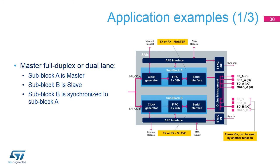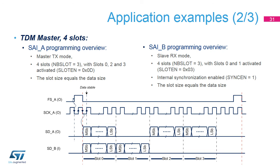For a full duplex master mode, two data lines are needed, so two sub-blocks need to be used. The master sub-block A provides the synchronization to the slave sub-block B, using the internal synchronization feature, or I/O line management. Note that in this example, sub-block B only uses the SDB. The amount of IOs is reduced to its minimum thanks to the internal synchronization. This is another kind of full duplex mode using the TDM protocol. Slot 1 is inactive or not used for sub-block A. Slots 2 and 3 are inactive for sub-block B. For both sub-blocks, the frame structure has four slots. Sub-block A will generate three samples per frame. Sub-block B will receive two samples per frame.